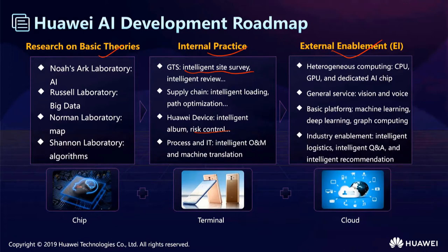The most important aspect of Huawei AI is industry enablement — for example, intelligent logistics, intelligent question and answer, and intelligent recommendation. Huawei AI's development goes from the inside to the outside, combining chips, terminals, and cloud computing capabilities, all to provide differentiated artificial intelligence. That is Huawei's development direction.